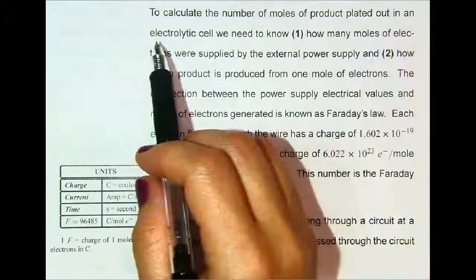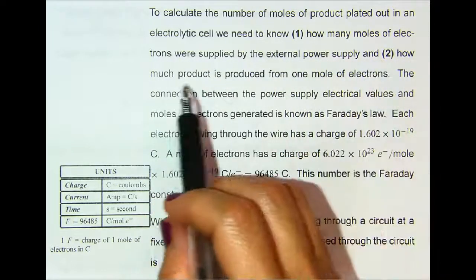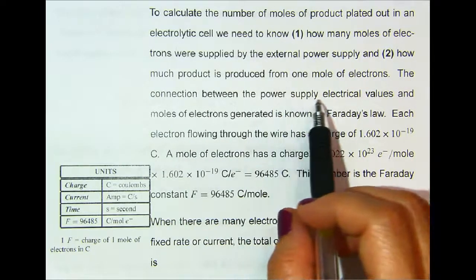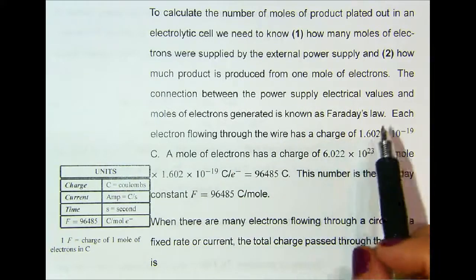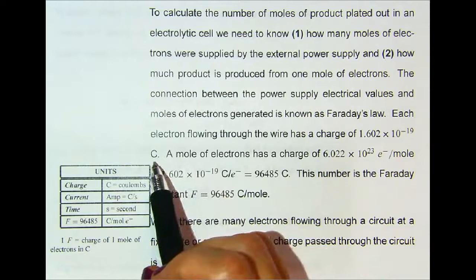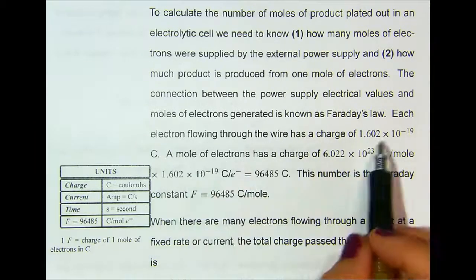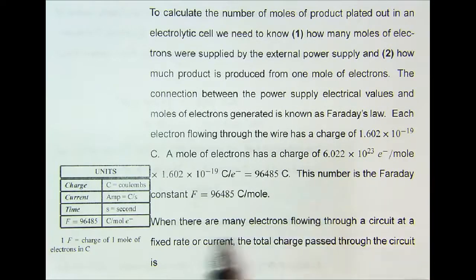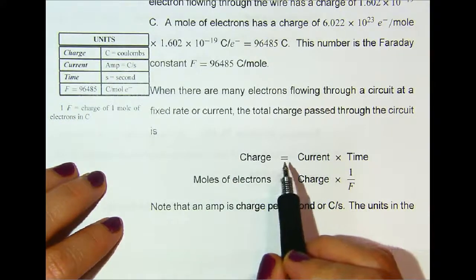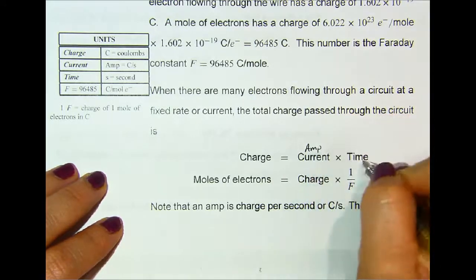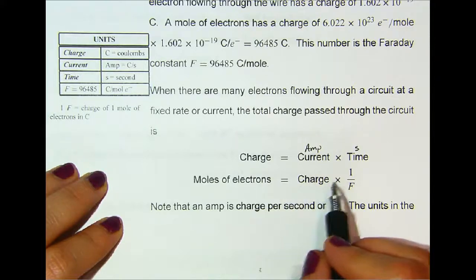To calculate the number of moles of product plated out in an electrolytic cell, we need to know: one, how many moles of electrons were supplied by the external power supply, and two, how much product is produced from one mole of electrons. The connection between the power supply electrical values and moles of electrons generated is known as Faraday's Law. Each electron flowing through the wire has a charge of 1.602 × 10⁻¹⁹ coulombs. A mole of electrons has a charge of 6.022 × 10²³ electrons per mole times that value, which equals Faraday's constant. The total charge passed is: charge = current (amps) × time (seconds), and moles of electrons = charge × (1 / Faraday's constant).